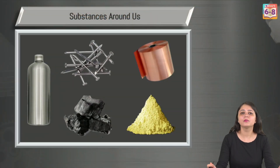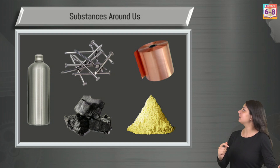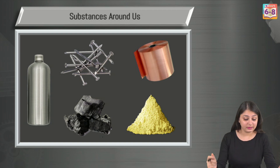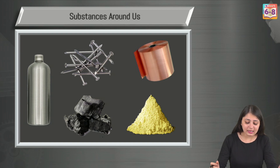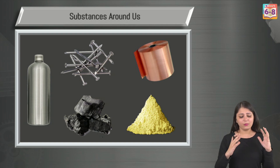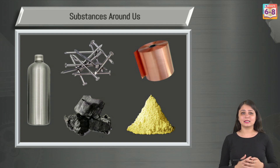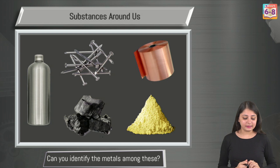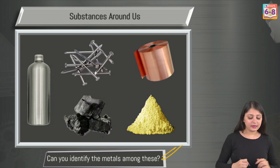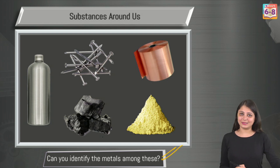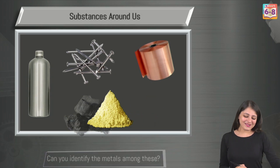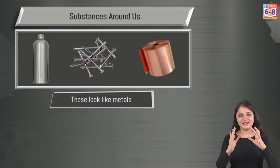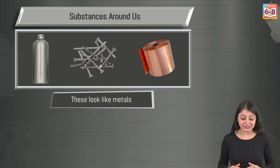There are so many substances around us — a bottle, nails, wire, tape, coal, sulfur, powders. Out of all these things, some are similar in nature, so we can classify them into two different categories: metals and nonmetals. Just by looking at them you can start to tell them apart.